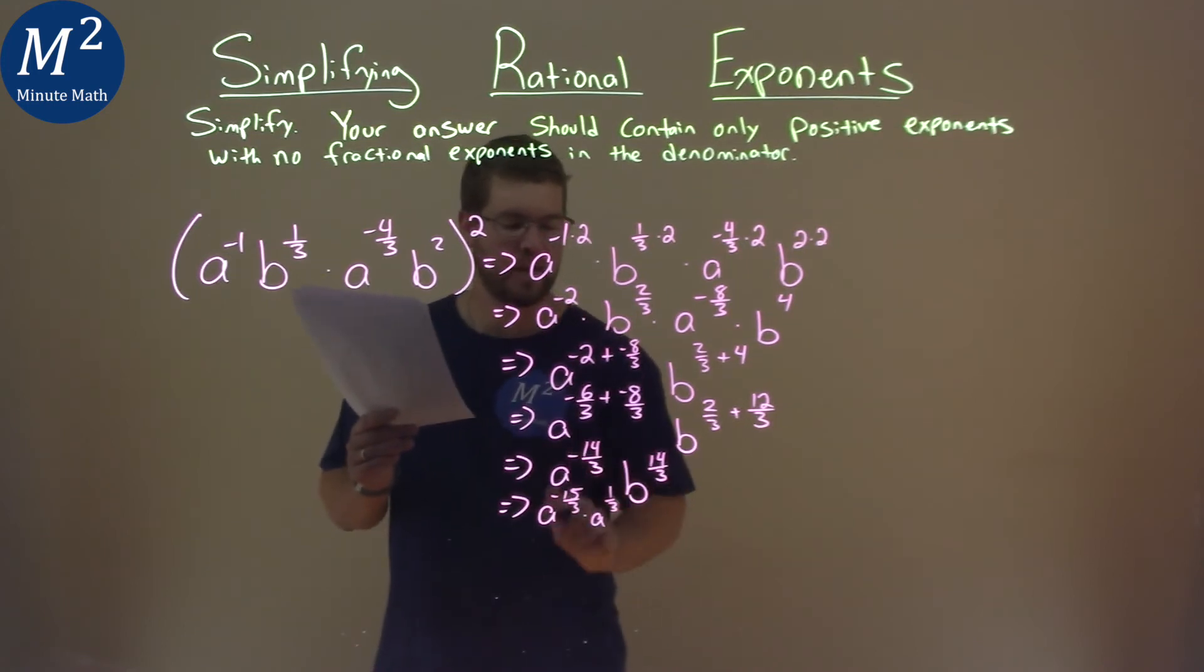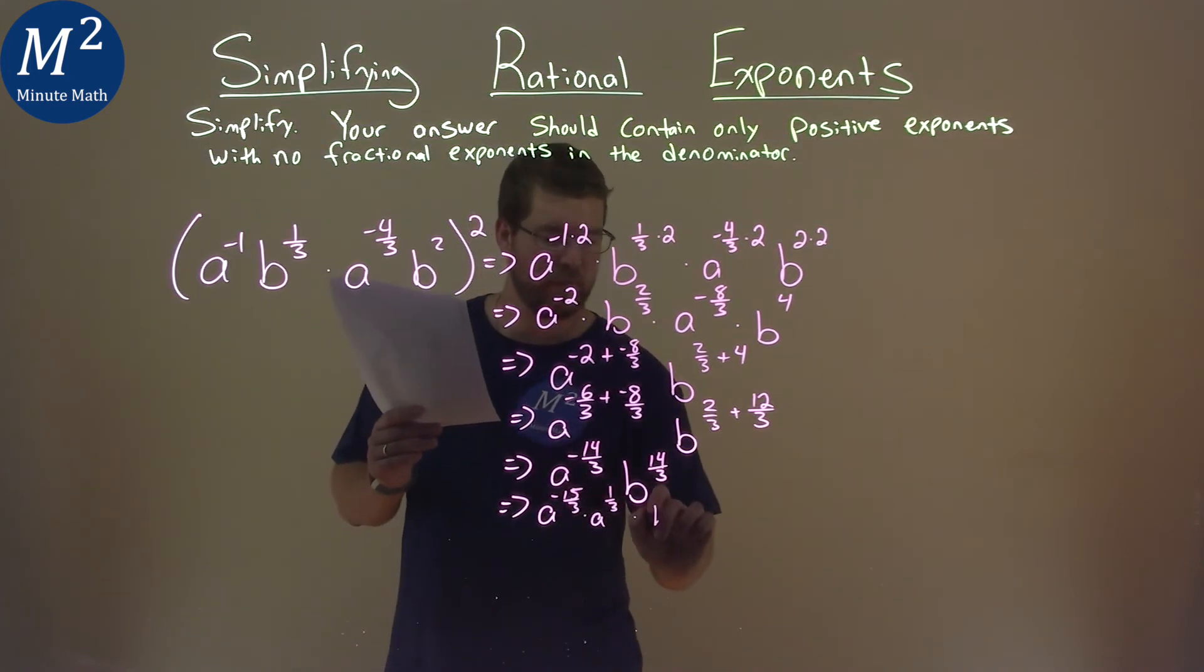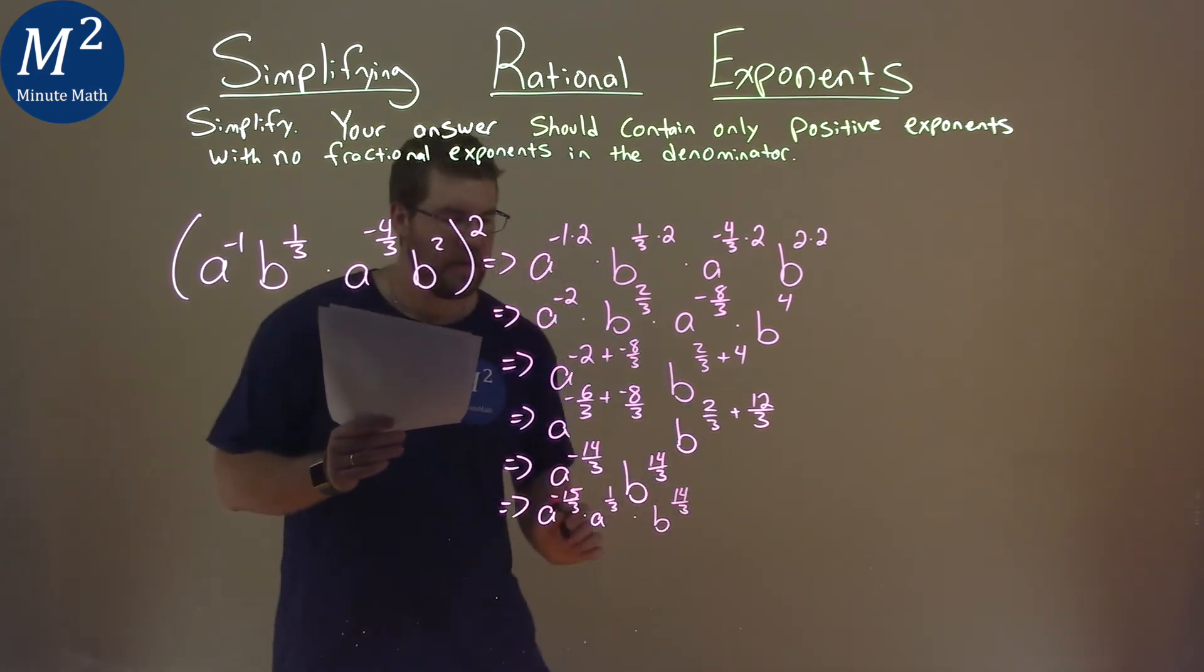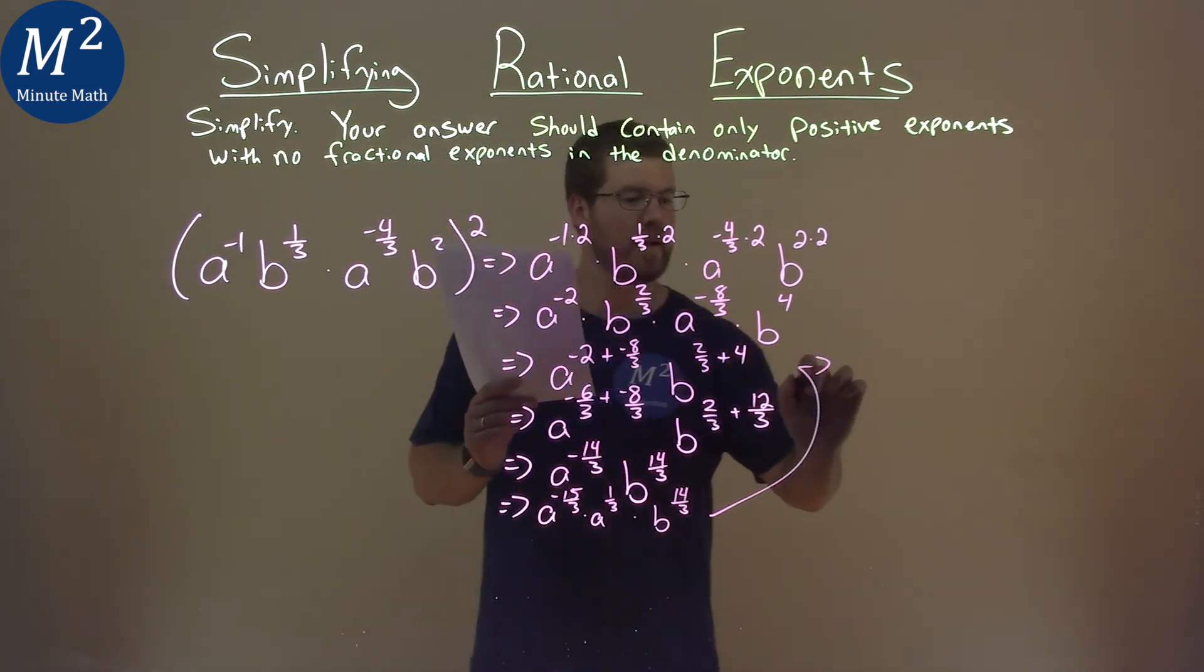Remember, if we add the exponents, that will get us negative 14/3, and we multiply by b to the 14/3. And now this is the tricky part. I'm going to fit it up here.